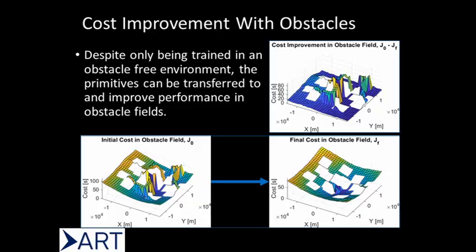Another advantage of this framework is the ability to transfer motion primitives to a new task. Here we demonstrate an improvement to the planner's ability to navigate through a field of obstacles, despite the fact that the learning agent was not trained on this task. As with the obstacle-free case, we see significant improvement in the cost to go of the learned library.